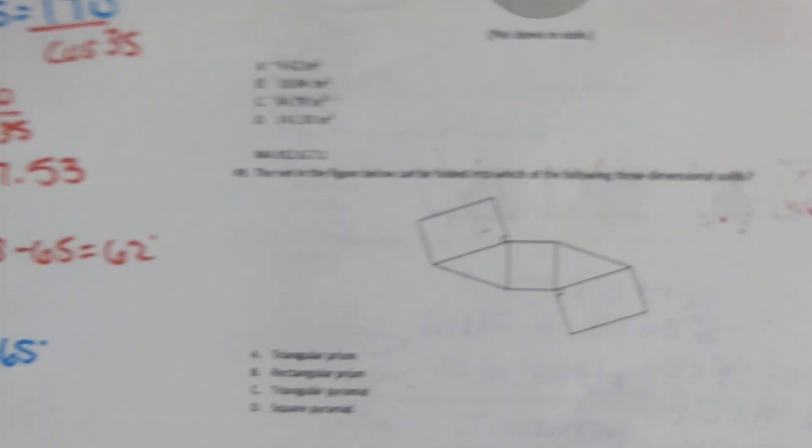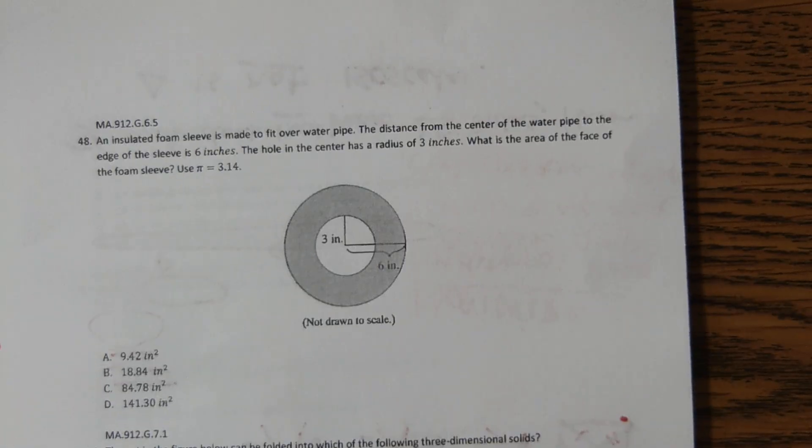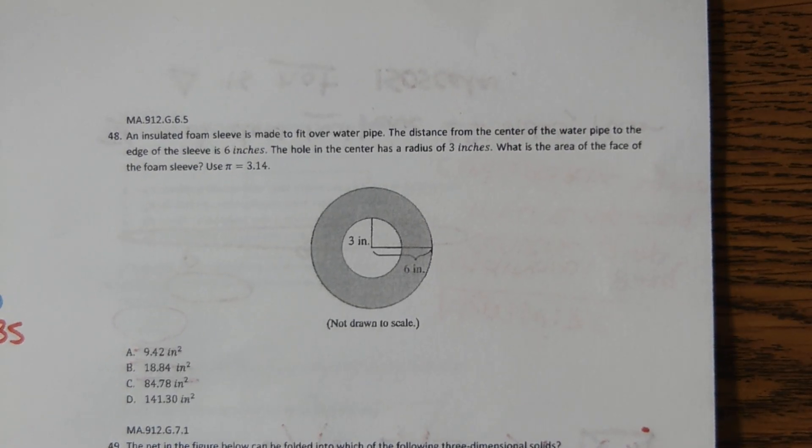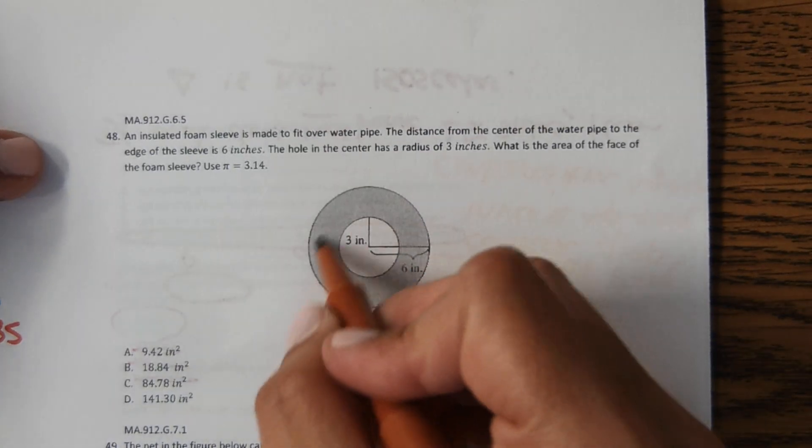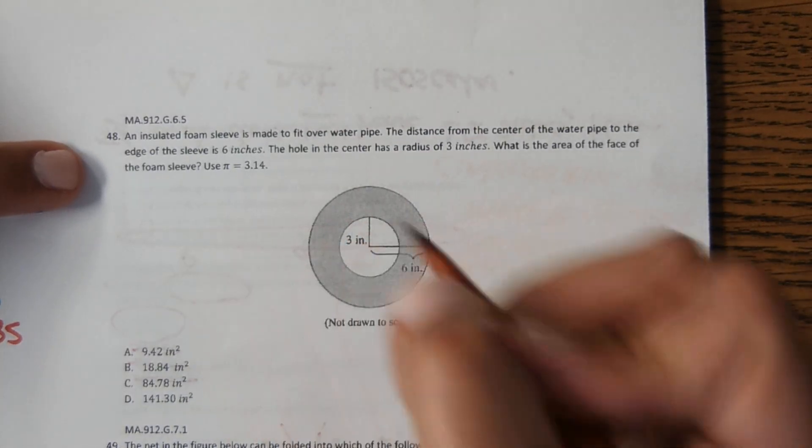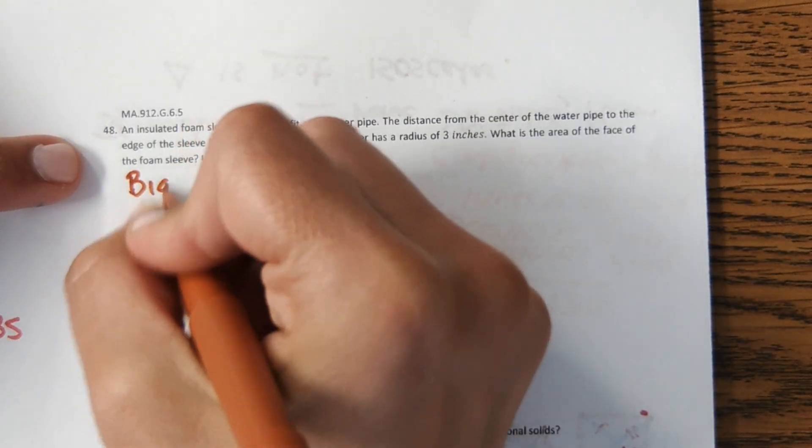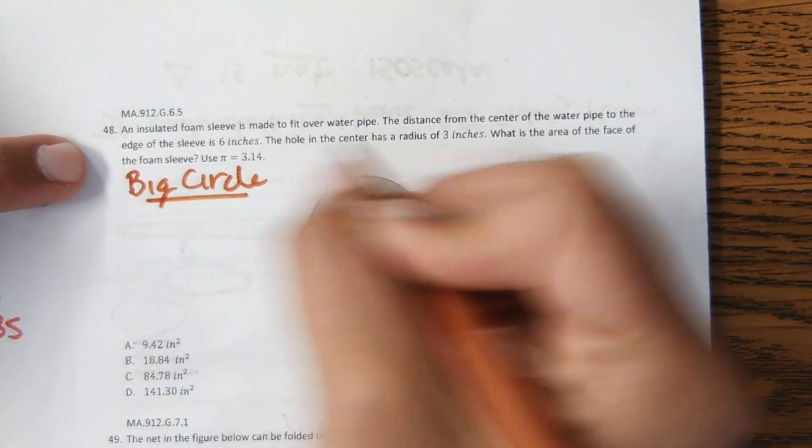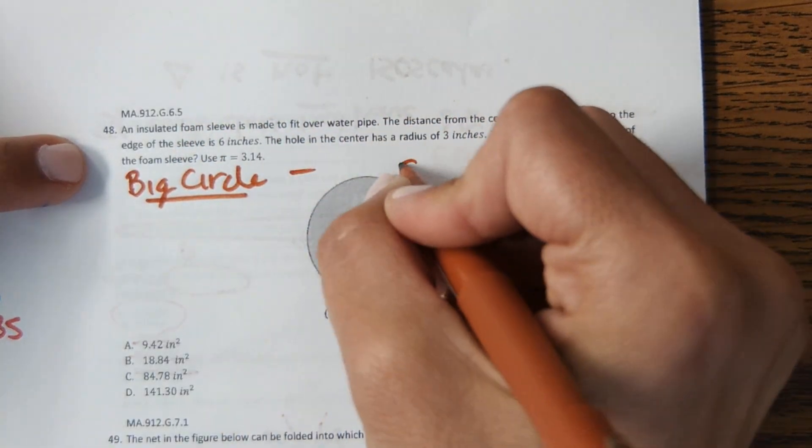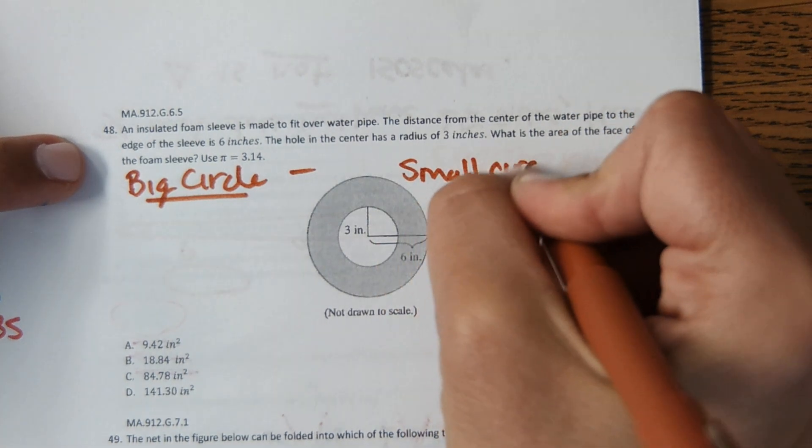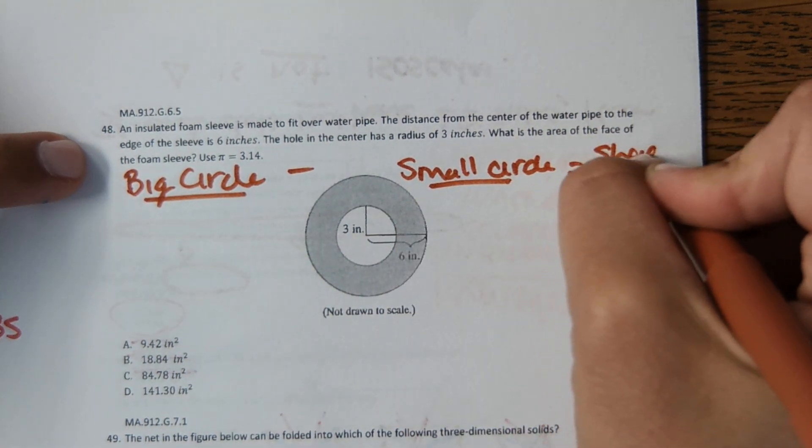Next. Over here, this is so common on both the EOC and SATs as well. They want us to find the area of just the shaded part. So what we're going to have to do is find the area of the big circle, subtract the area of the small circle, and then that will equal just the shaded part.